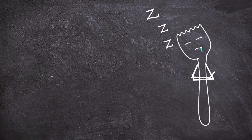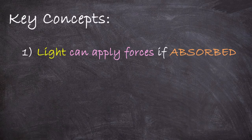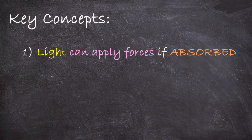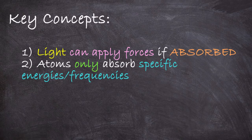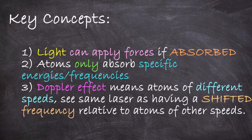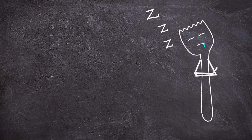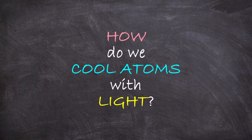But okay, enough with the fundamentals. Our key concepts were that light can push atoms if the atoms can absorb that light, that atoms can only absorb certain frequencies, and that the frequency of light an atom sees in terms of whether it can absorb or not actually depends on its own motion relative to the laser source. So with that understanding, let's finally get on with our main discussion. How do we actually cool atoms down?